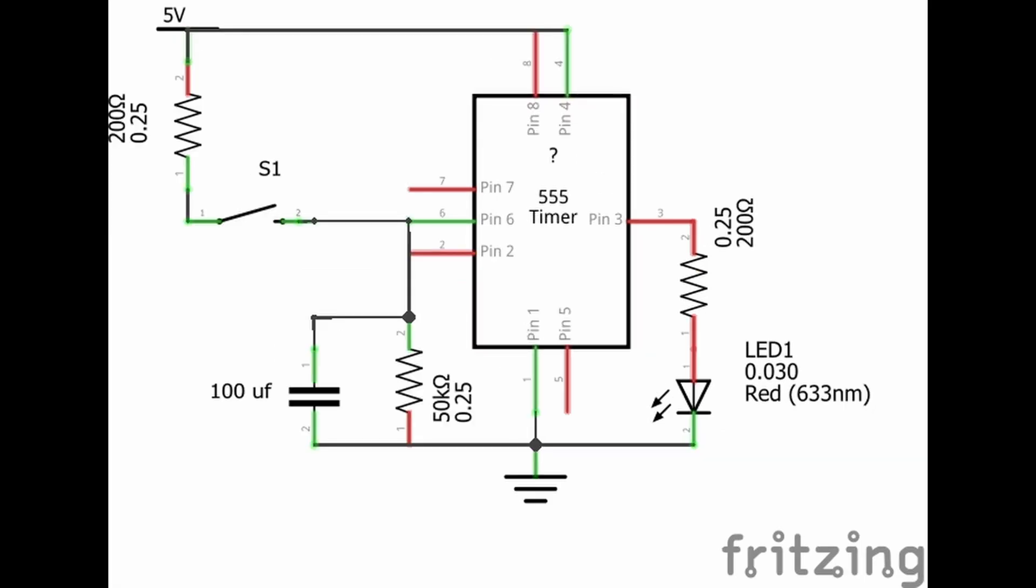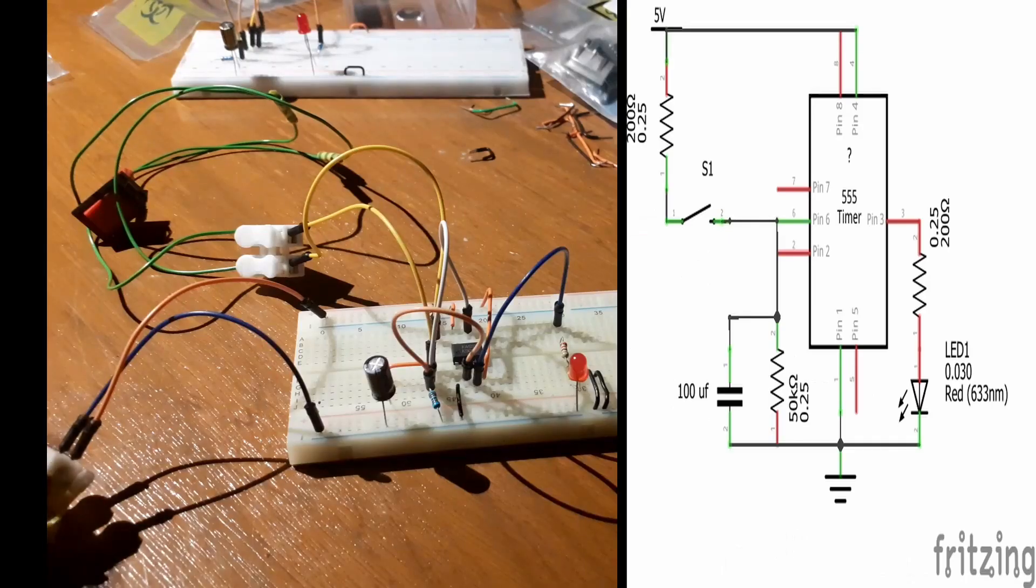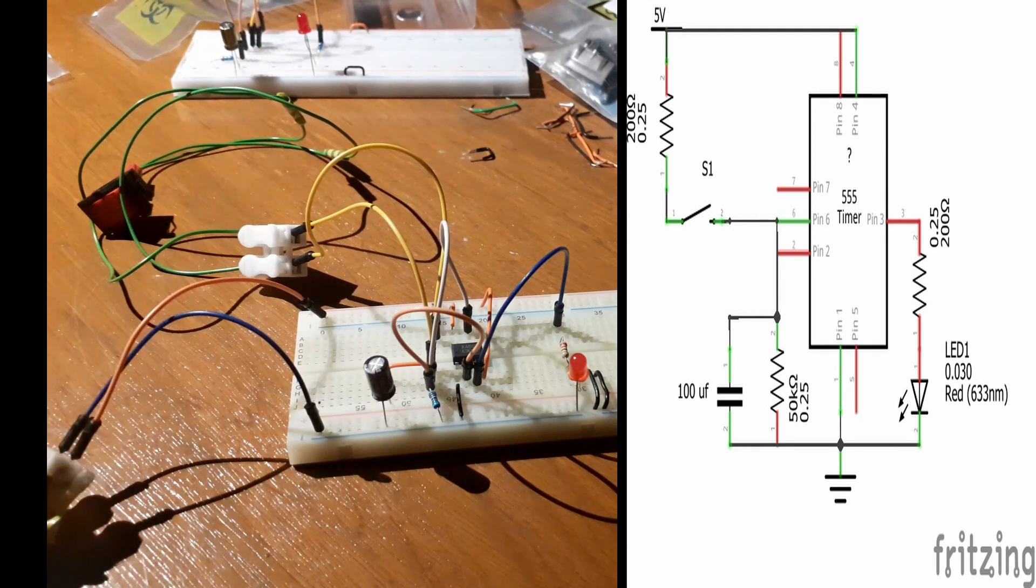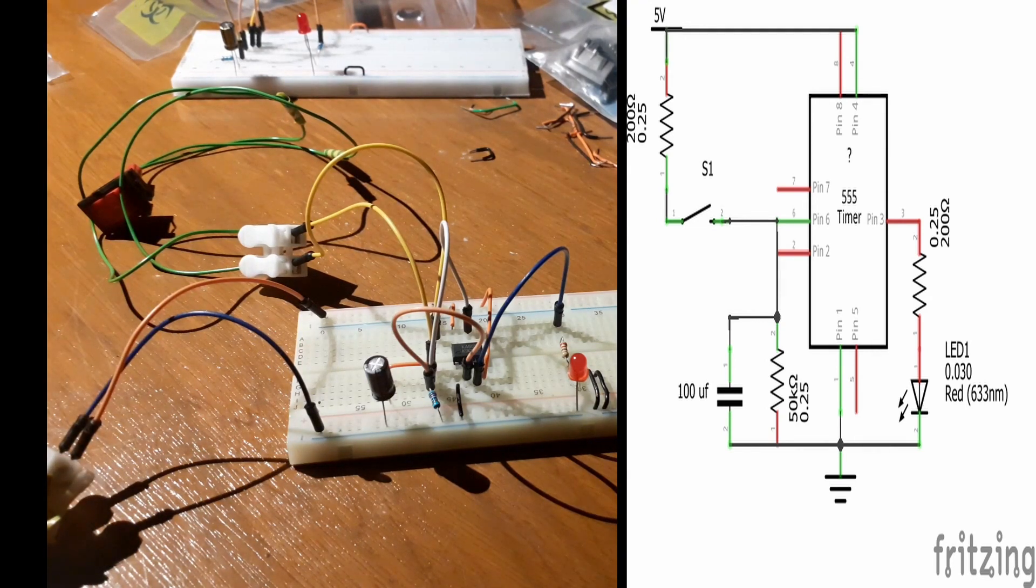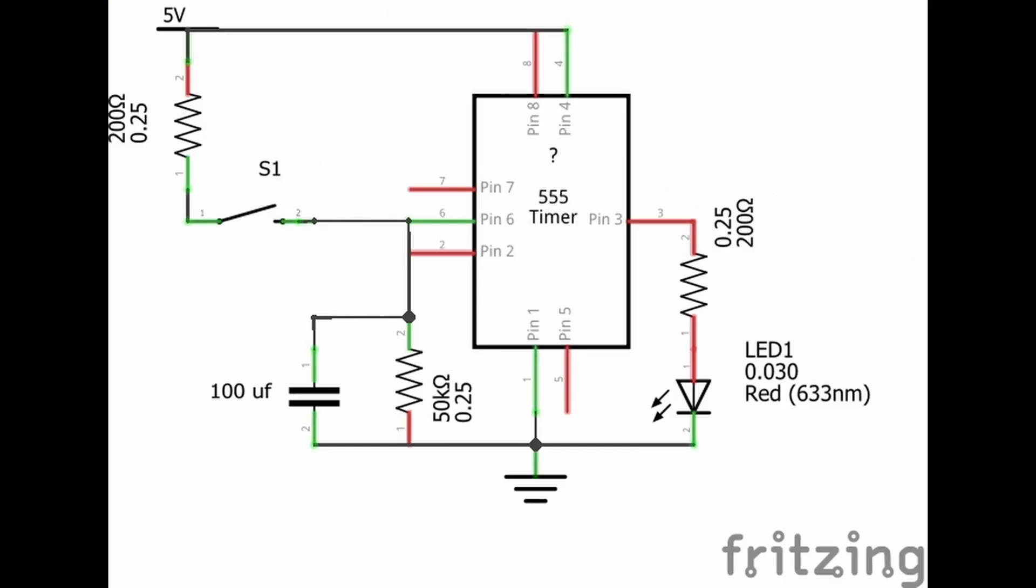This is similar to the previous one. In the initial state, switch S1 is closed. Pin 2 is high, so LED is off and the capacitor is fully charged. When switch S1 is opened, the capacitor discharges and keeps pin 2 high. After the time delay, the capacitor is discharged. Now pin 2 is low and pin 3 high, so the LED is on.